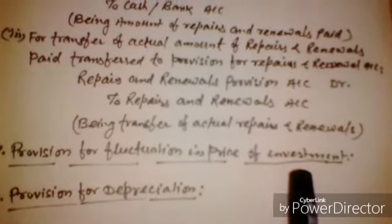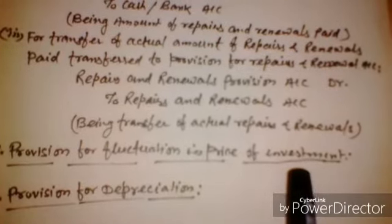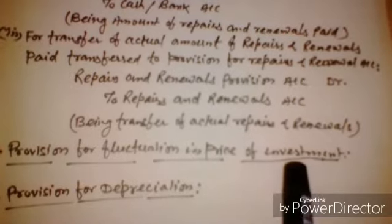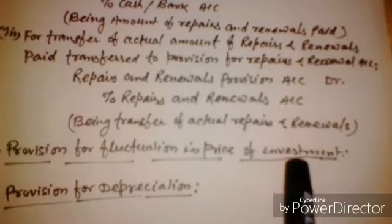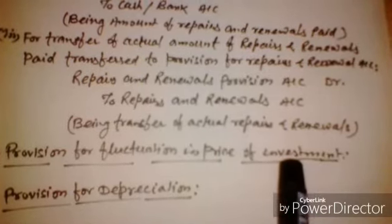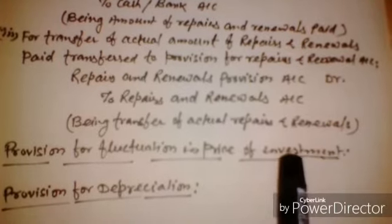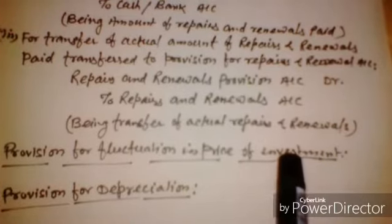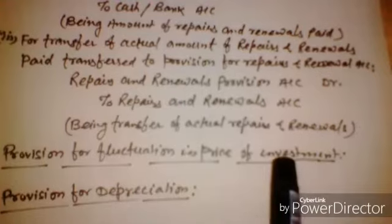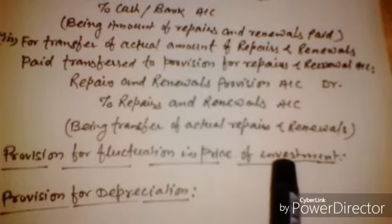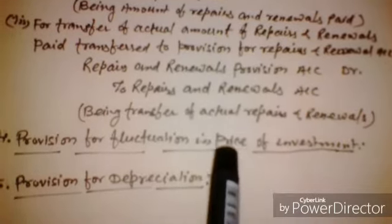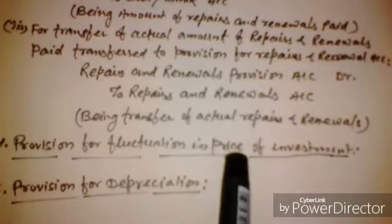The fourth provision is provisions for fluctuation in the price of investments. Since prices of investments in securities are subject to fluctuations, a provision is made to neutralize the effect of such fluctuations. The profit and loss account is debited and the investment fluctuation fund is credited.